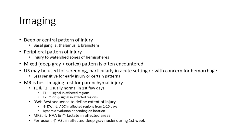On MRI, T1 and T2 are usually normal in the first few days. T1 shows increased signal in the affected region. T2 shows increased or decreased signal in the affected region. DWI is the best sequence to define the extent of injury, showing increased DWI and decreased ADC in the affected region from 1 to 10 days, with dynamic evolution depending on location. MR spectroscopy shows decreased NAA and increased lactate in the affected area.